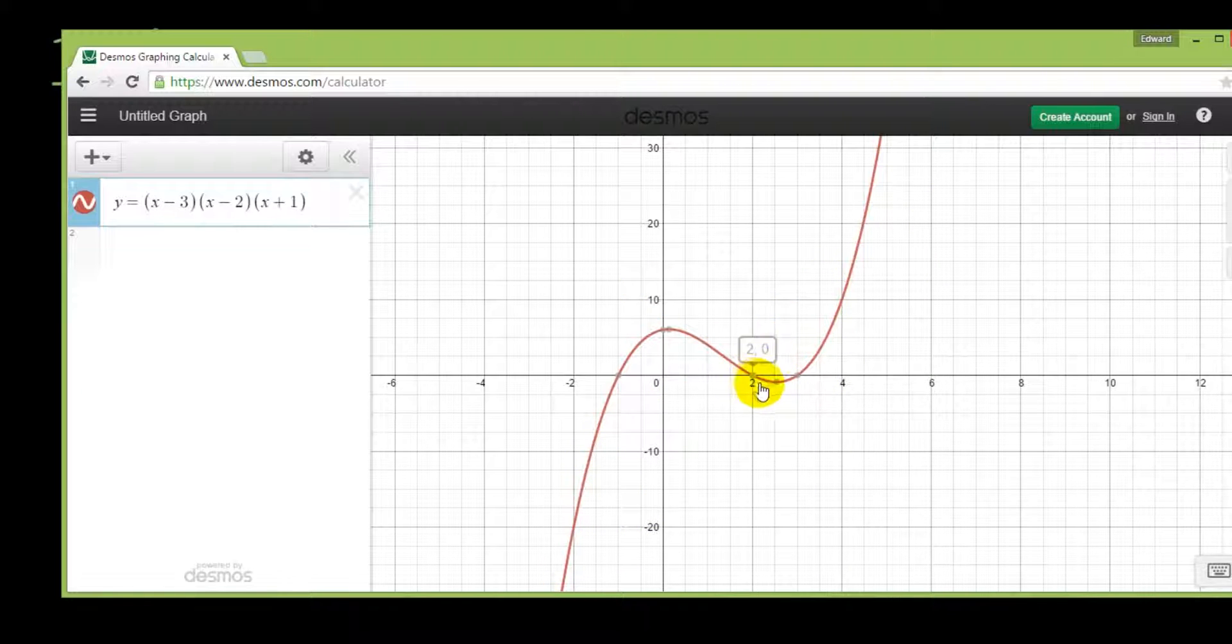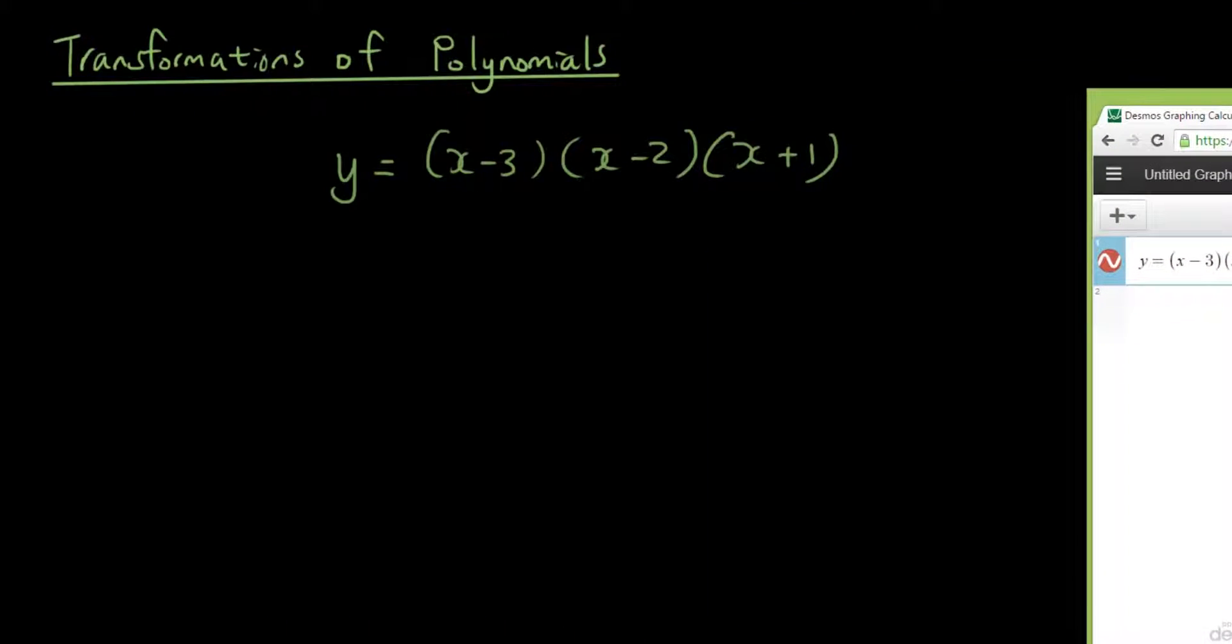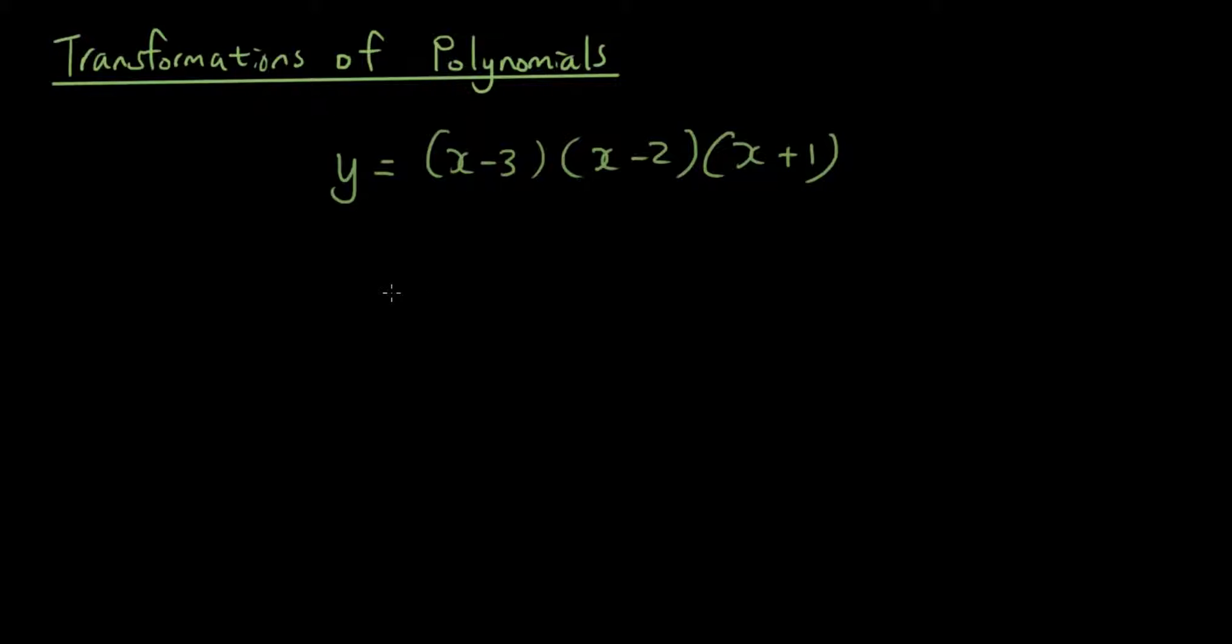Now what we want to do is I want to move the whole graph up. Okay, so it's going to maintain its shape and I'm going to move the line up here somewhere. So that is called a vertical translation. So what I want to do is I want to move the whole graph up and I want you to try typing this in Desmos.